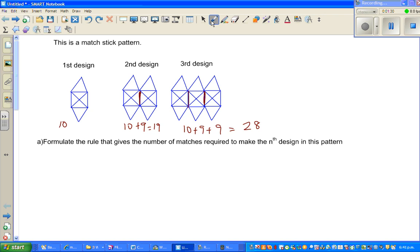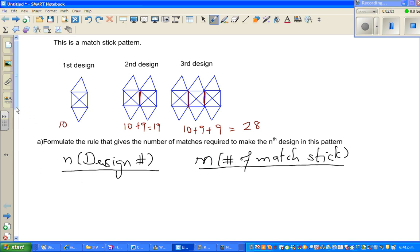Let's make up a table from this pattern. It's good to make up a table. This leads to the table. So n is the design number. We denote the letter n for the design number, and let's say m for the number of matchsticks.